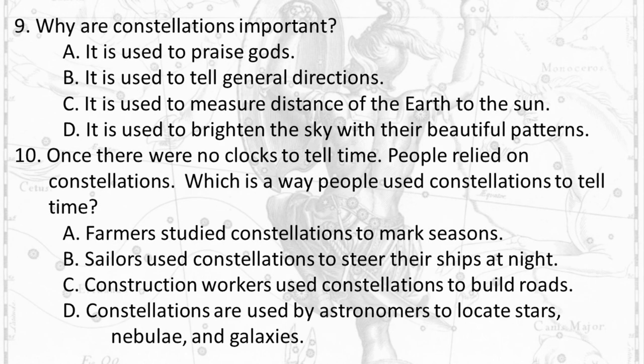Question 9: Why are constellations important? A. It is used to praise gods. B. It is used to tell general directions. C. It is used to measure the distance of the Earth to the sun. D. It is used to brighten the sky with their beautiful patterns. Question 10: Once there were no clocks to tell time, people relied on constellations. Which is a way people used constellations to tell time? A. Farmers studied constellations to mark seasons. B. Sailors used constellations to steer their ships at night. C. Construction workers used constellations to build roads. D. Constellations are used by astronomers to locate stars, nebulae, and galaxies.